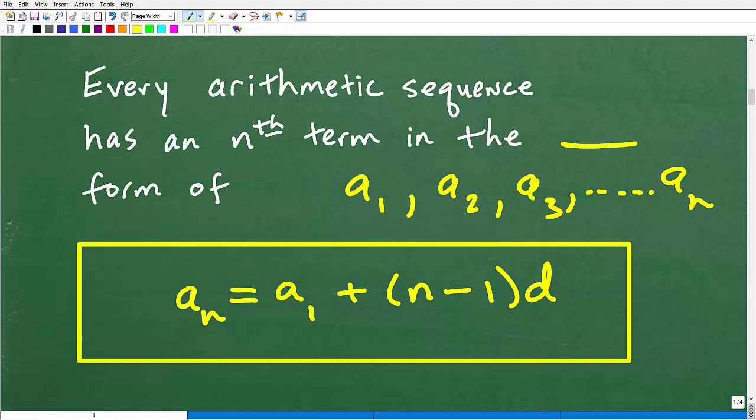Now, the nth term can be whatever term we want way out in that sequence. So to figure out the nth term, of course, this could be a 100 or a sub 4, it will follow this formula right here.